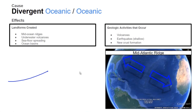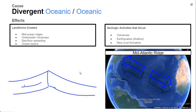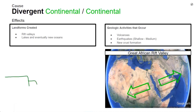When two oceanic plates are pulled apart, magma rises to fill the gap, creating small volcanoes underwater. An incredible example is the Mid-Atlantic Ridge. You can see that the Atlantic Ocean is being pulled apart over millions and billions of years, making Africa and South America separate, creating new crust at the bottom of the ocean.